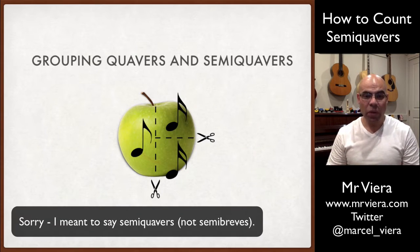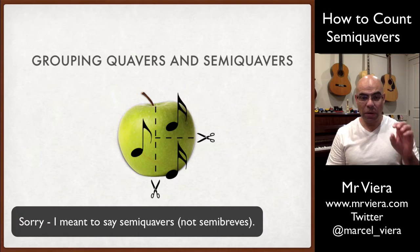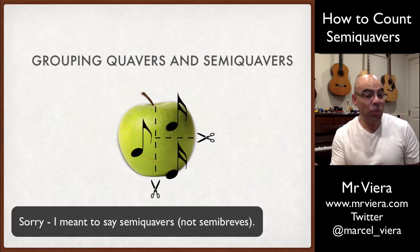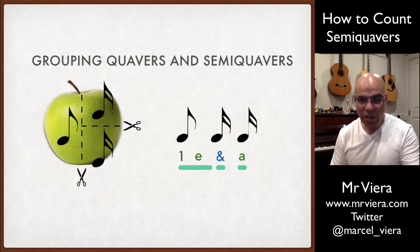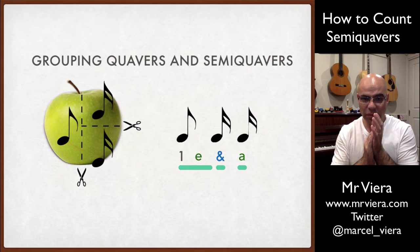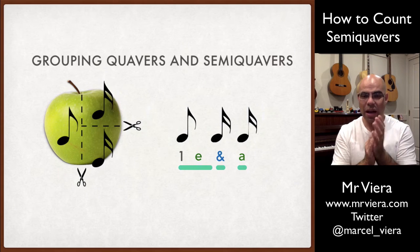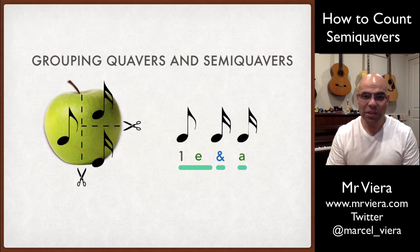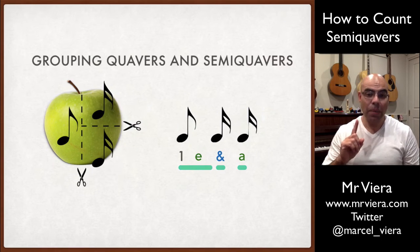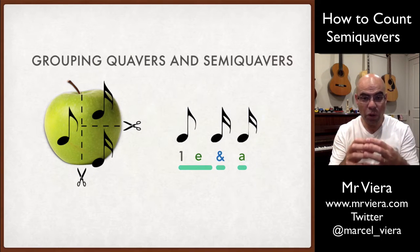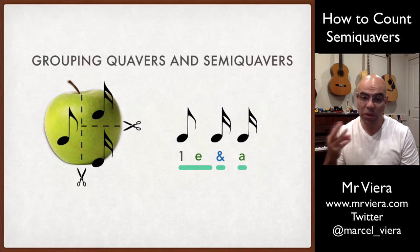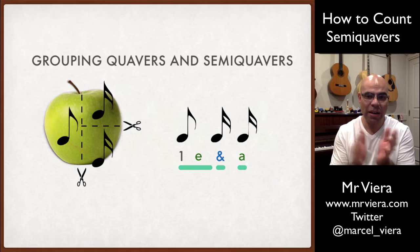Effectively, we have a quaver followed by two semiquavers. When we write this or count this, it would look like this and we have one E and R. I'll count that again: one E and R. For the purposes of illustrating it here, I'm starting the count on beat number one, but if this group of notes was on beat number two, you'd say two E and R, or if it was on three, you'd go three E and R and so on.